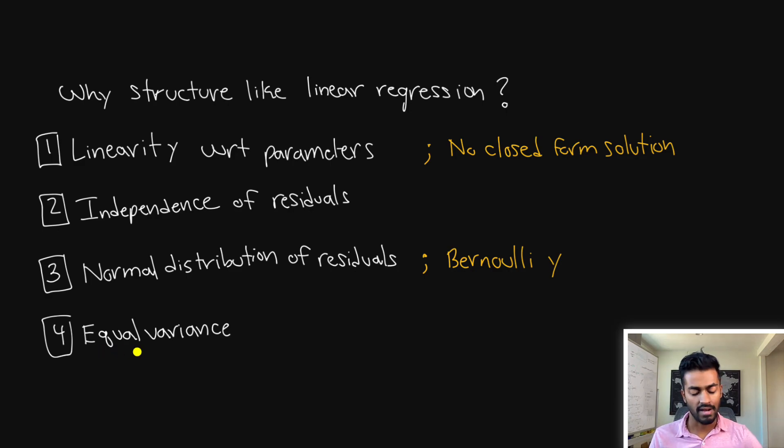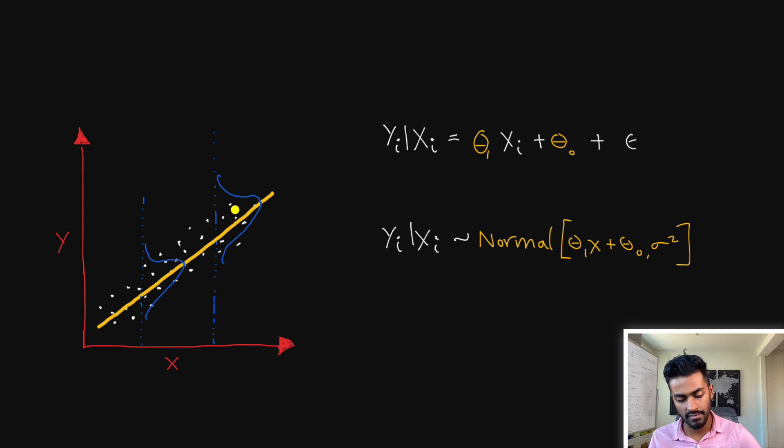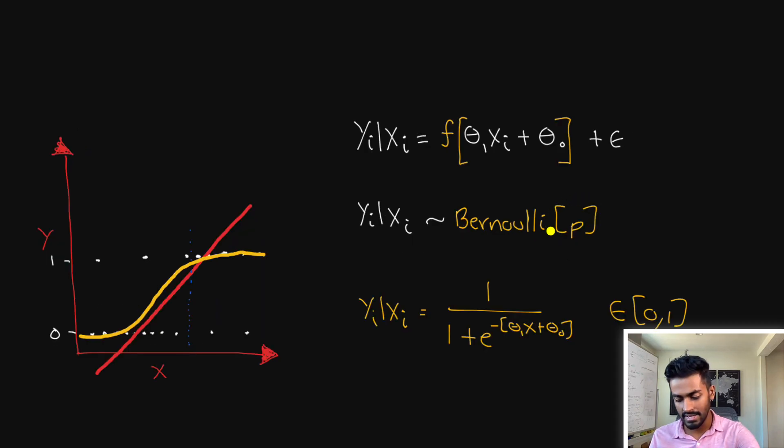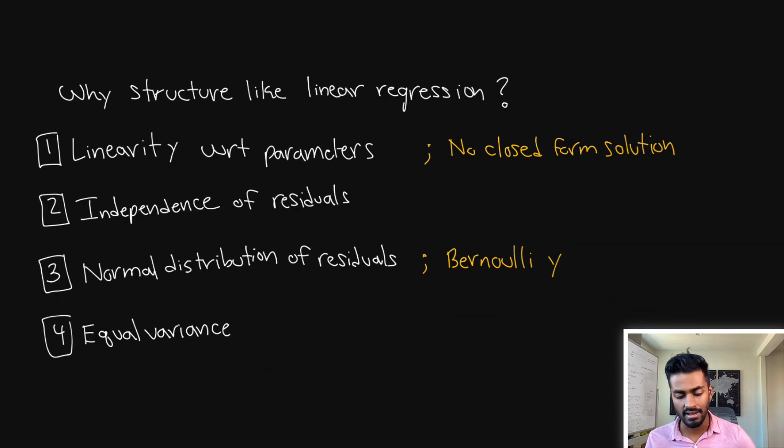Next, we have equal variance. What this means in linear regression is that the width of each of these blue curves is going to be exactly the same. They're going to have the same variance for every value of x. But that term actually does not exist in the Bernoulli distribution. And so we kind of just eliminate it.